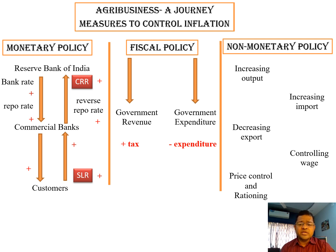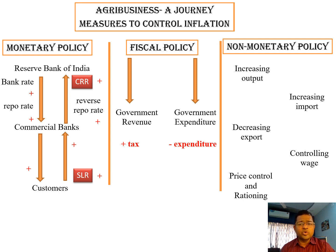Non-monetary policy is controlled by increasing output. Normally, if supply is increased within the national boundary — either by increasing output, decreasing exports, or increasing imports — then aggregate demand will be controlled at a lower level, and in this way inflation can be controlled.